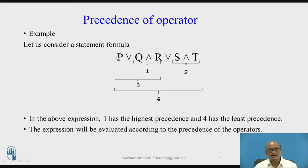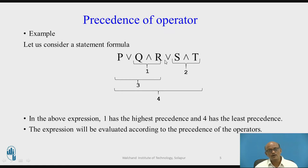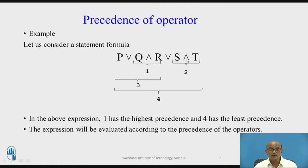Now let us understand one example of how the precedence of operator will take place. Here we see P OR Q AND R OR S AND T. Overall there are two operators: OR and AND. We know that AND has got the highest priority, and AND appears twice — between Q and R, and between S and T. Now how to resolve which one should be evaluated first?